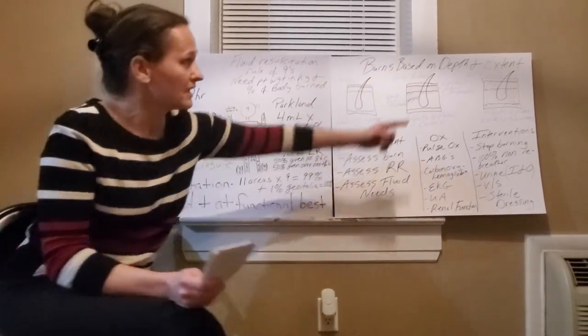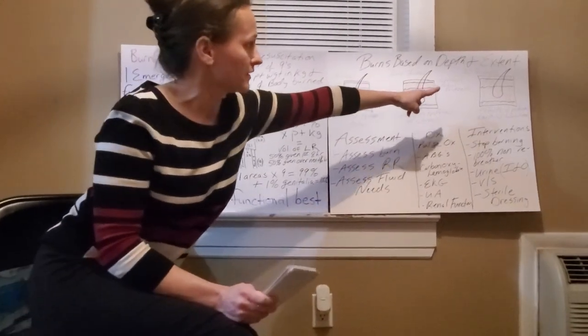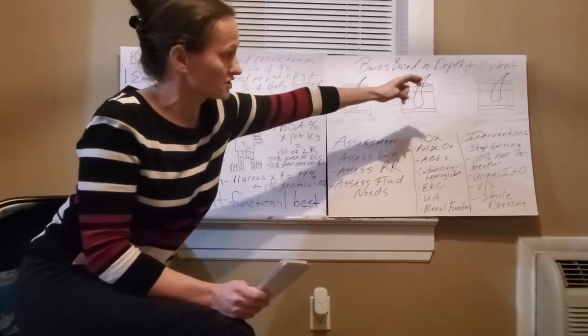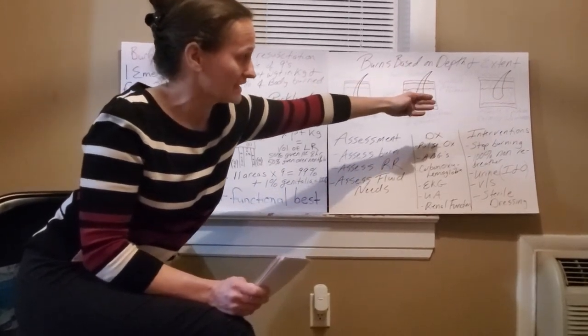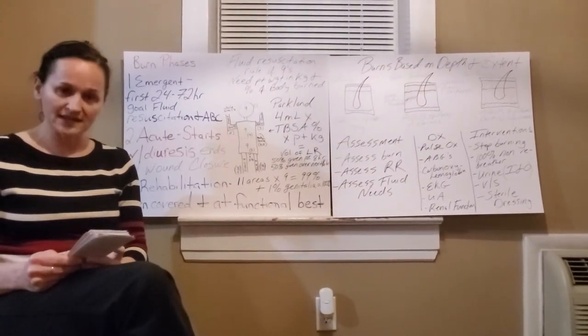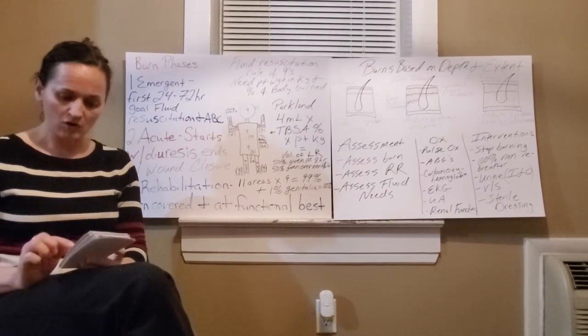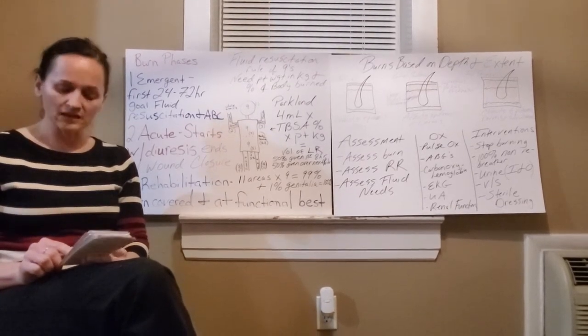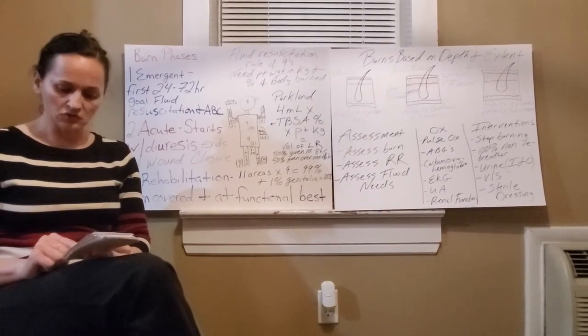A full thickness burn is in our last picture here, and it involves our epidermis, our dermis, and our subcutaneous layer of our skin. And it is caused by long contact with flames, steam, or high voltages, and they look waxy, white, to leathery, mottled, charred.